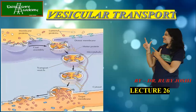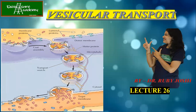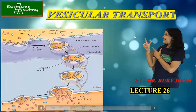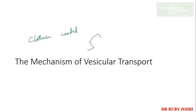Hello guys and welcome back to Excel Short Academy. Today we are going to do vesicular transport. We previously talked about the vesicles which form from the ER, which go to the Golgi and vice versa. Now we are going to learn in detail the mechanism of vesicular transport. If you remember, we have talked about endocytosis where we mentioned that clathrin-coated vesicles are there — it's a triskelion protein.